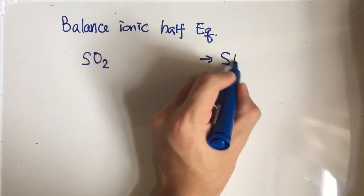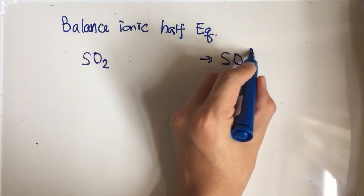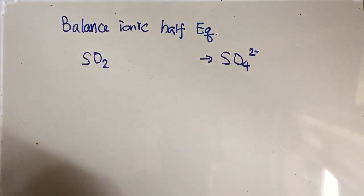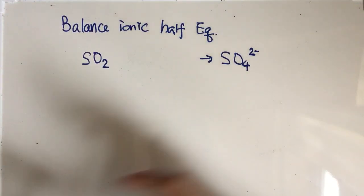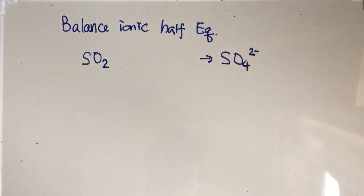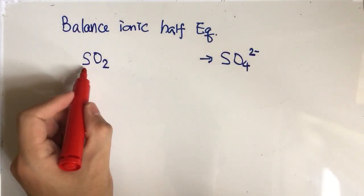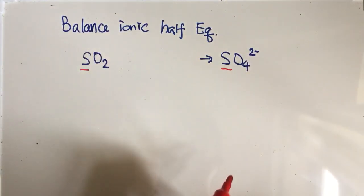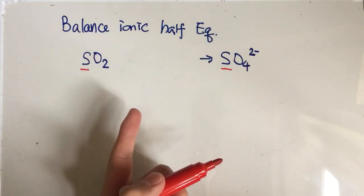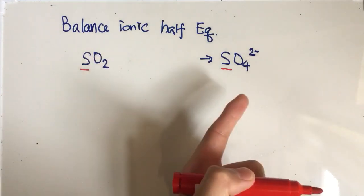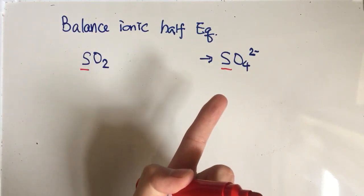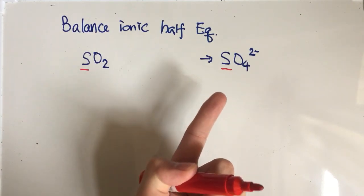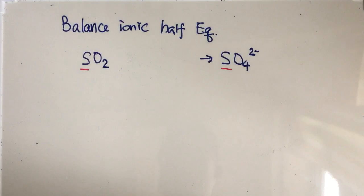When you balance the ionic half equation, you have to balance the main element first, which is sulfur. However, it is already balanced - both the left-hand side and right-hand side are equal to one. So you don't have to balance the main element because it's already balanced.